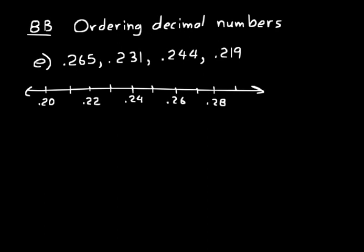And .265, let's just locate that, that would be about right here, and I'll put .265 right above that. Then .231, that would be right about .23, so I'll put a dot right there and say .231.